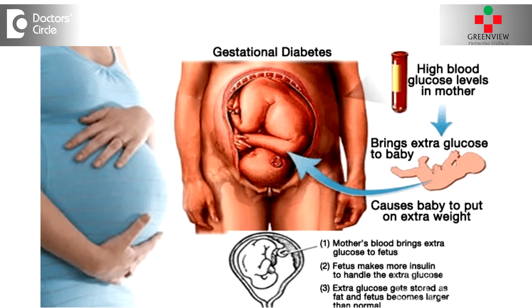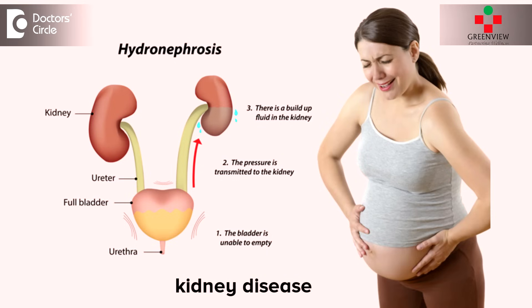Other conditions include diabetes. It is important for the patient to control her blood sugar before becoming pregnant, as increased sugar levels during the first three months of pregnancy can cause birth defects. Kidney disease is another condition — women with kidney disease often have difficulty getting pregnant and also have a risk of miscarriages.